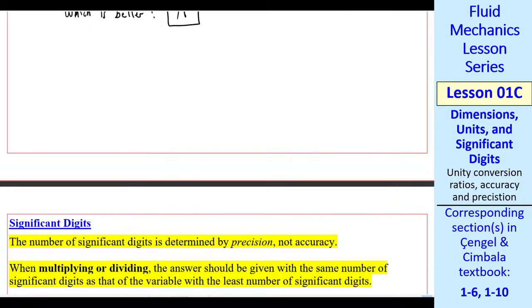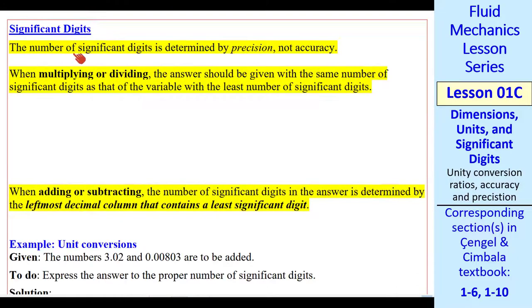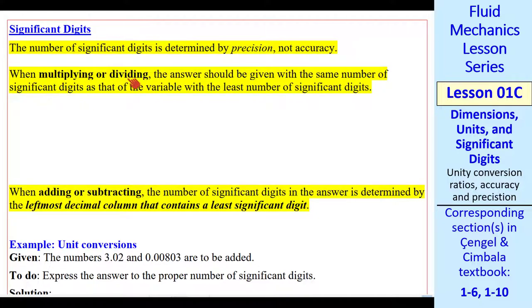Now let's discuss significant digits. First of all, the number of significant digits is determined by precision, not accuracy. We'll look at two cases, multiplying or dividing, and adding or subtracting.